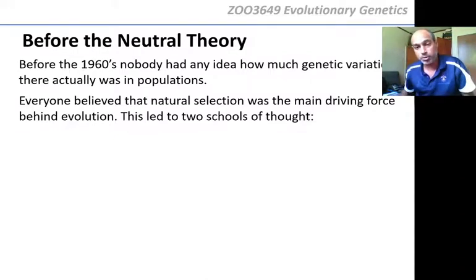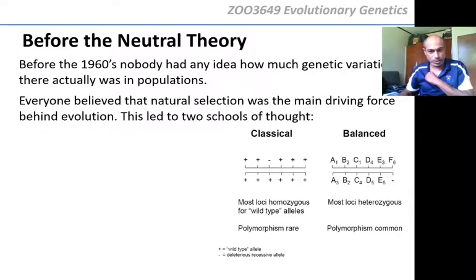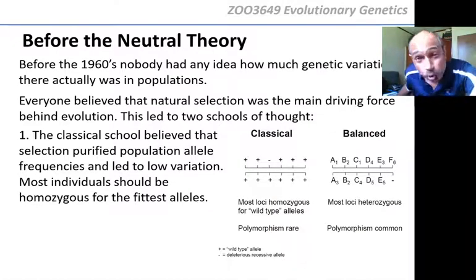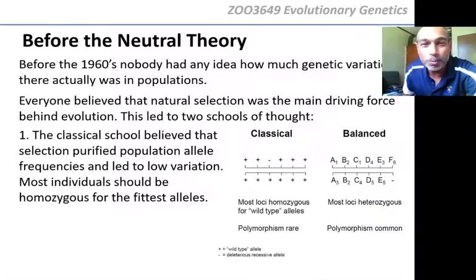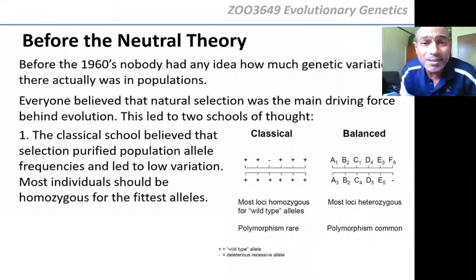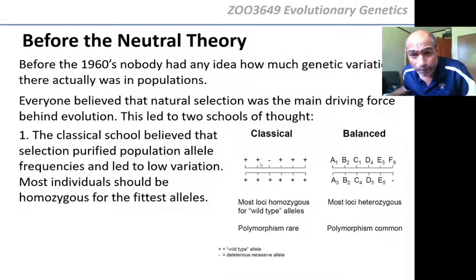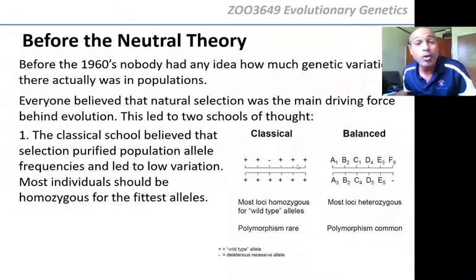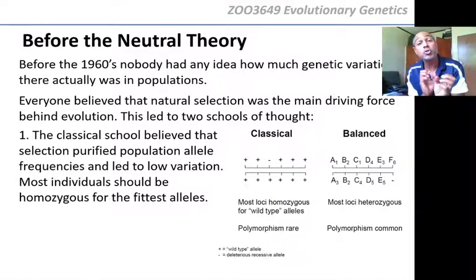This led to two schools of thought, both relying on natural selection. There was the classical school, which believed in purifying selection — selection against the homozygous recessive. What is purifying selection? It is selection against the homozygous recessive individual. Even when you have strong purifying selection against the homozygote recessive, the heterozygote always keeps the recessive allele in the population.